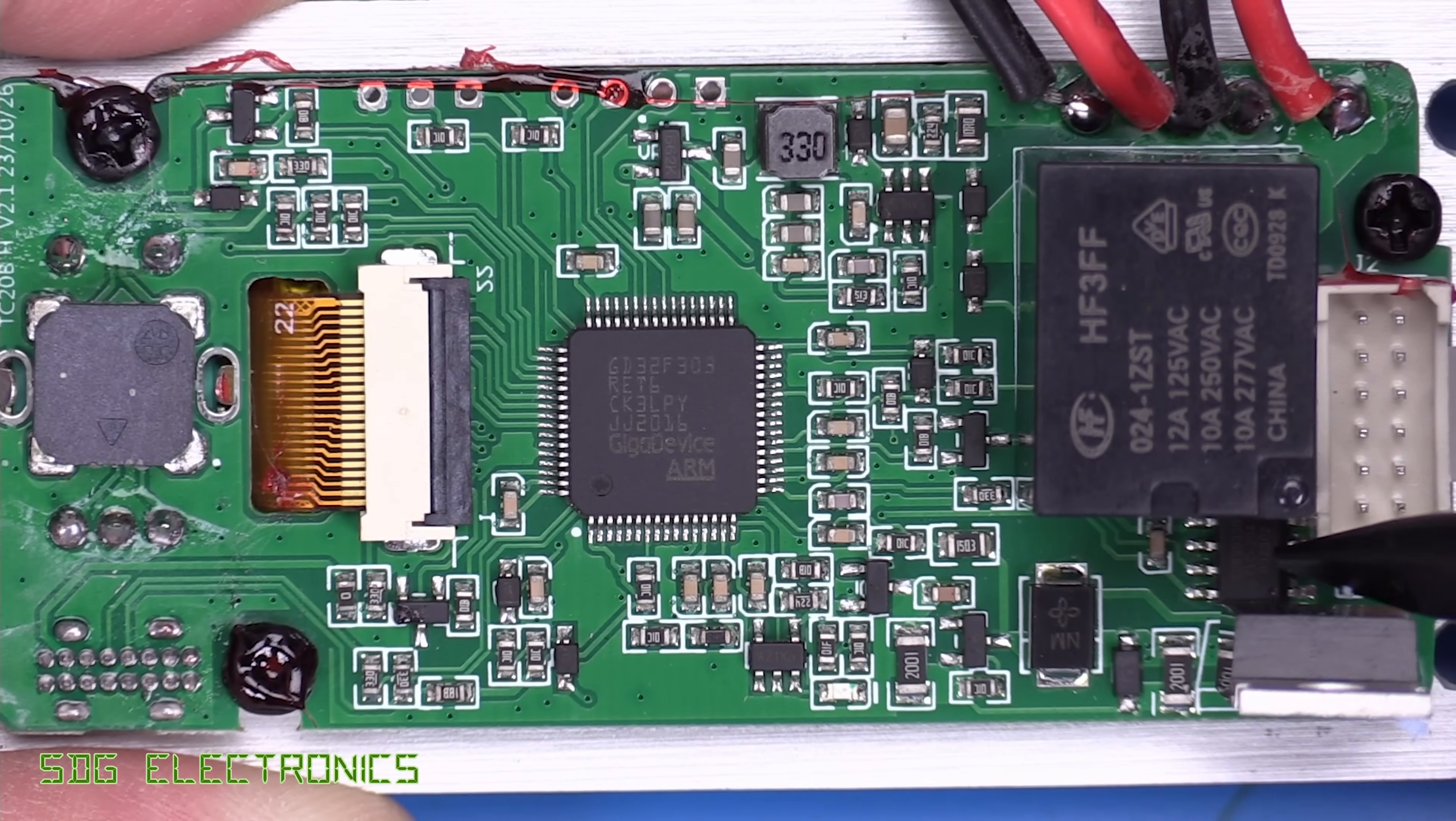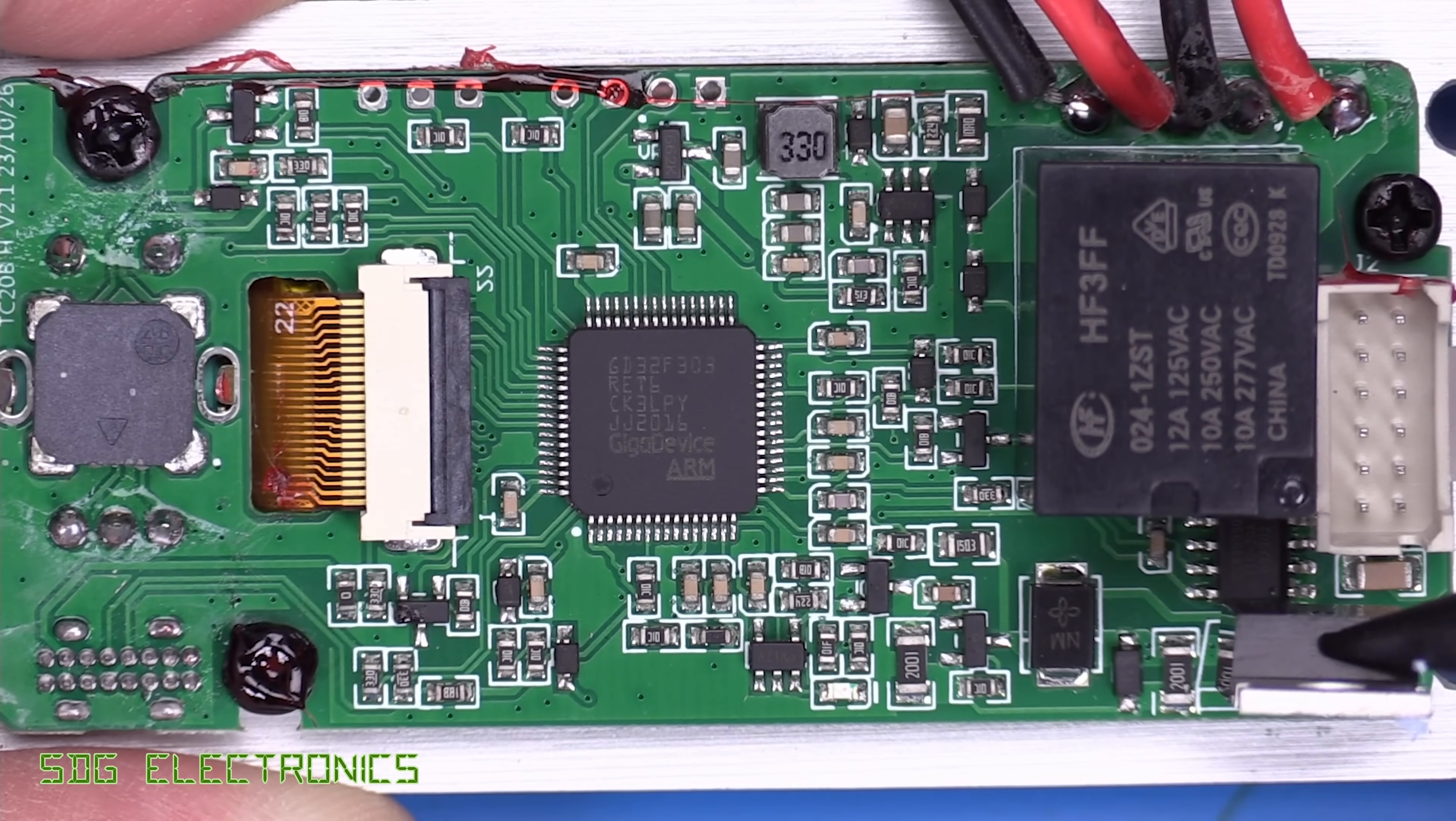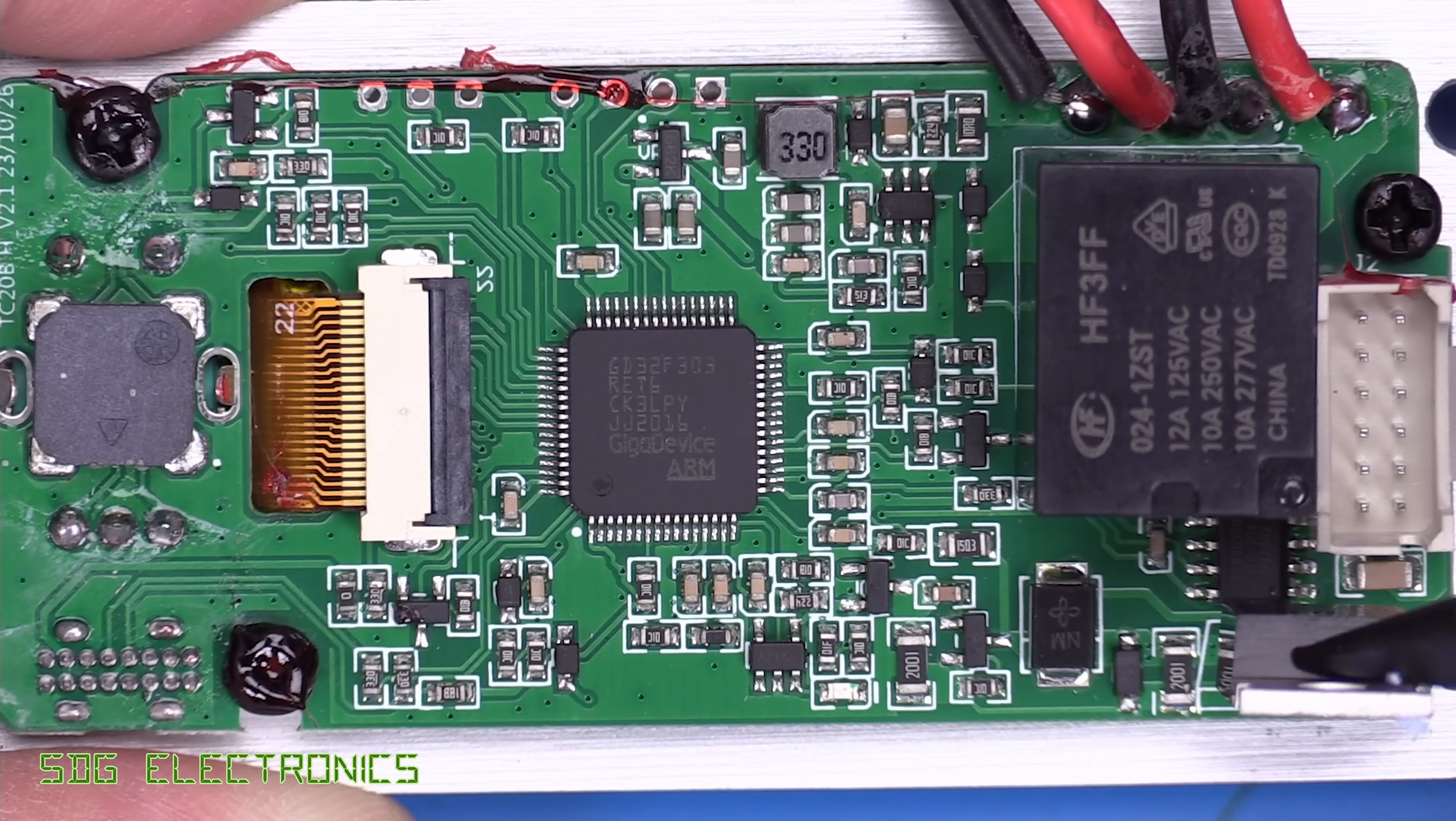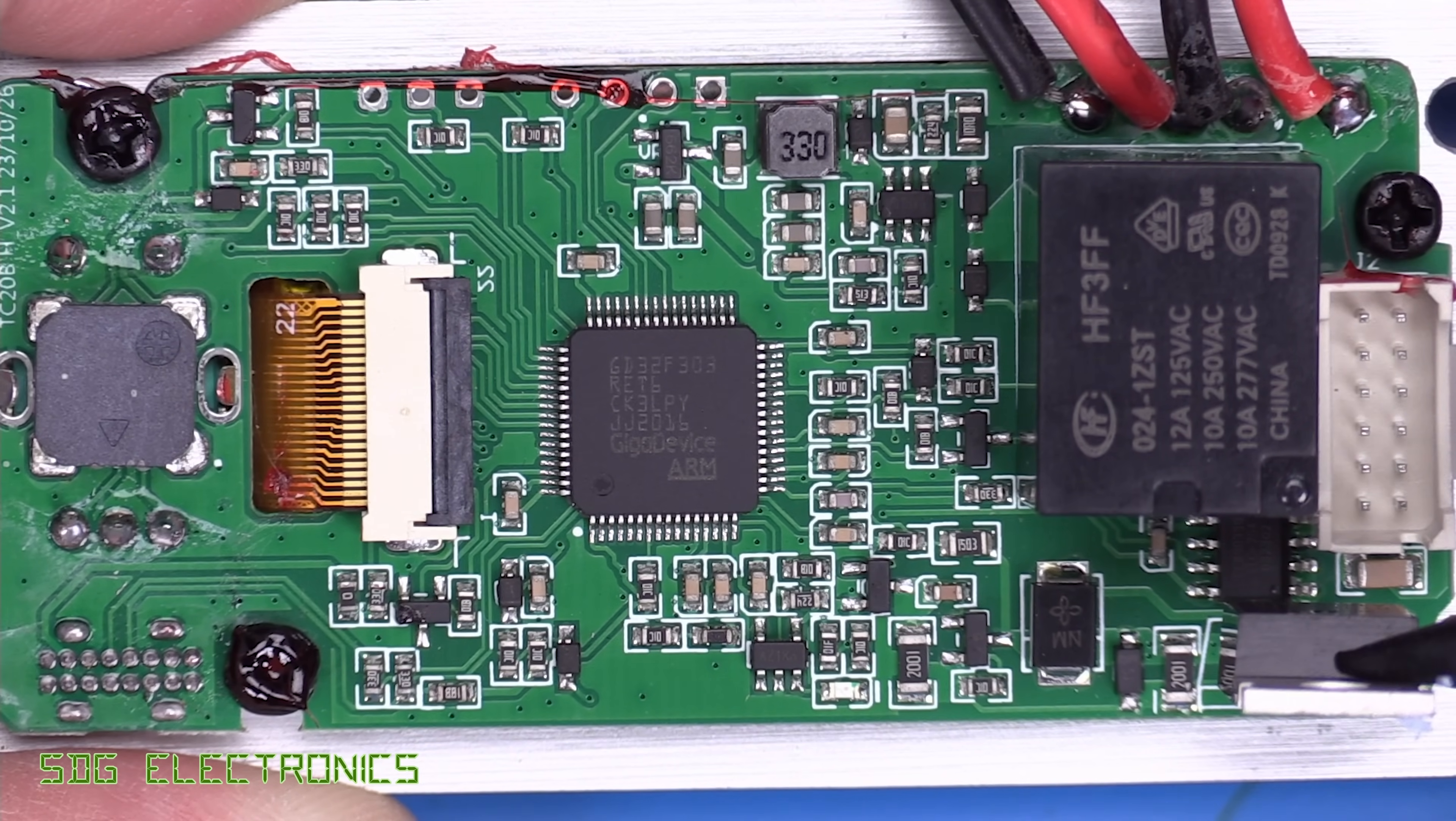We've got a Hall Effect current sensor, which is measuring the current into the heater. And then we've got a large MOSFET here. So this is an HYG200P10. And this one is rated for 80 amps at 100 volts.